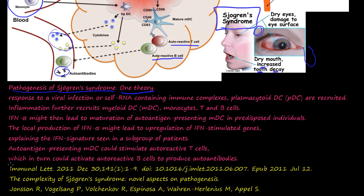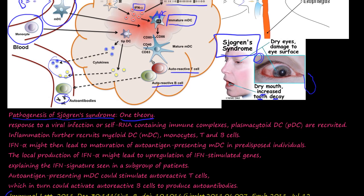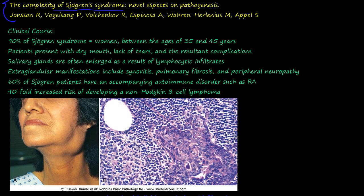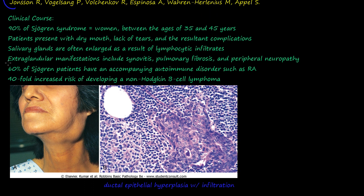There is a journal review that discusses some of the pathogenesis pathways of Sjögren's Syndrome in detail — it gets technical but is a good read. Clinically, 90% of Sjögren's Syndrome cases are women between the ages of 35 and 45 years old.